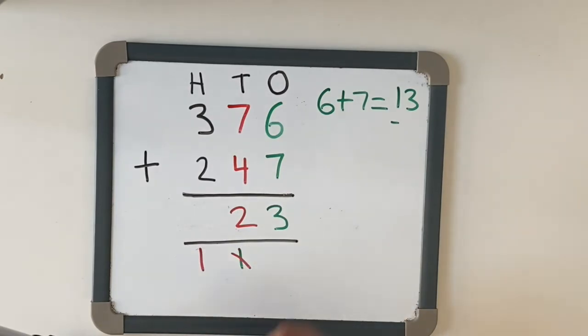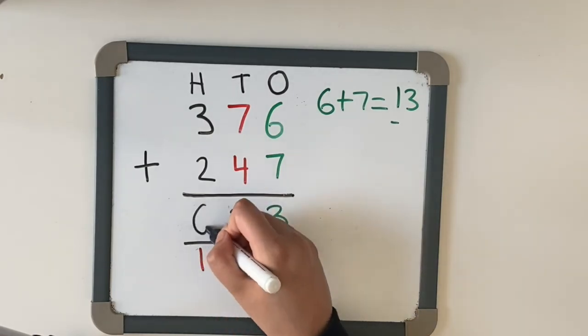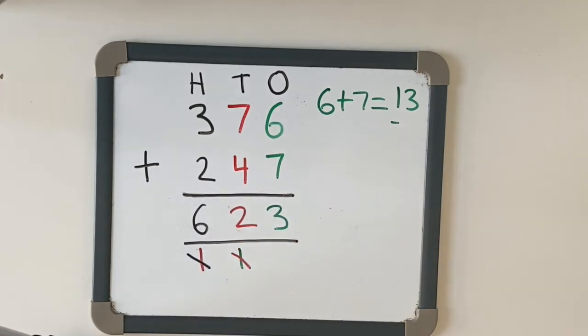And now we're going to do 300, add 200, add 100 and the answer is 600. So 376 add 247 equals six hundred and twenty-three.